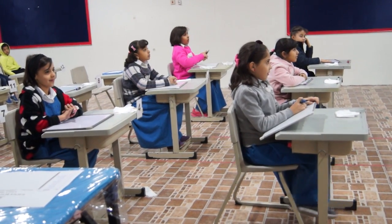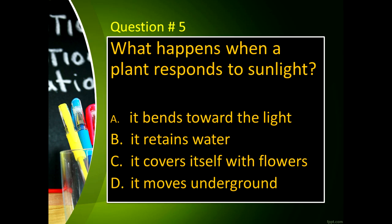Question number 5: What happens when a plant responds to sunlight? Letter A, it turns toward the light. Letter B, it retains water. Letter C, it covers itself with flowers. And letter D, it moves underground.